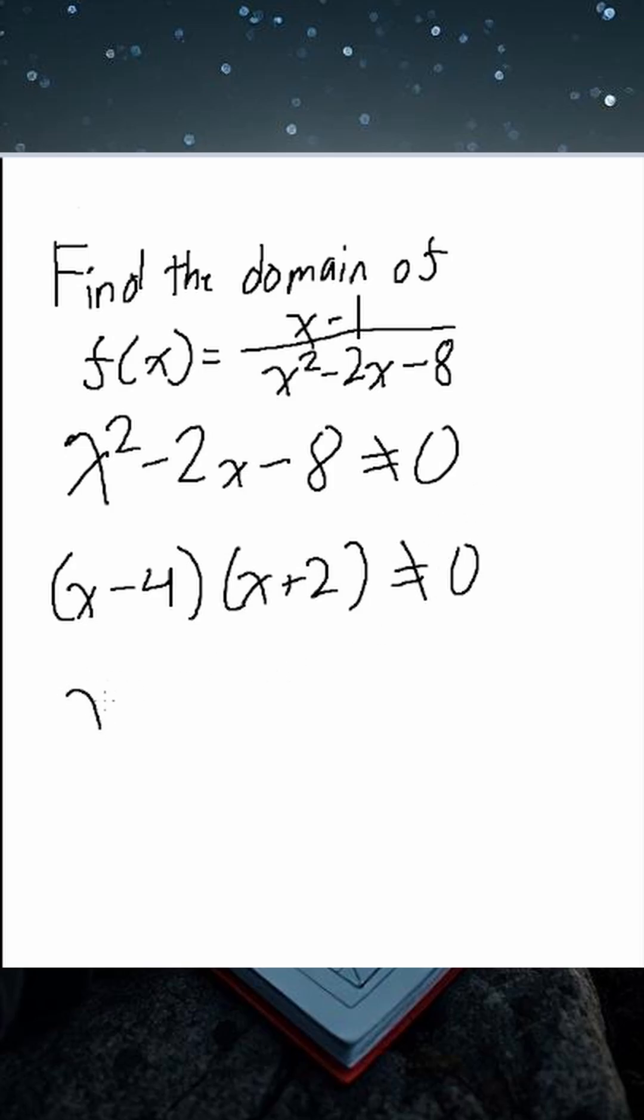Now we have x minus 4 equals 0, and we have x plus 2 equals 0. x is equal to 4, and x is equal to negative 2. But remember,